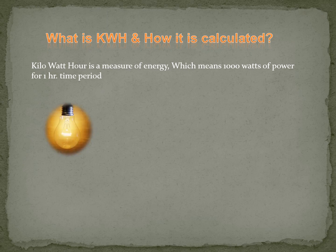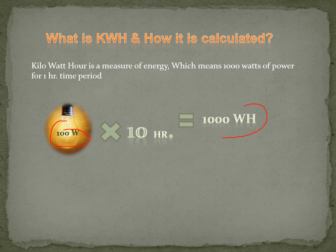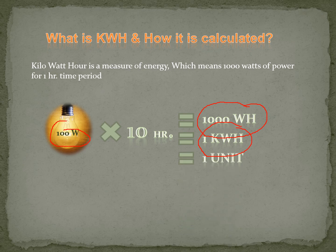Let's take a simple example. Suppose you have a bulb with a capacity of 100 watts, and it is running for 10 hours. If you multiply watts by hours, you get unit consumption. Here, 100 watts × 10 hours = 1000 watt hours, which we call one kilowatt hour — and which we call one unit. So when we talk about a unit, it is one kilowatt hour, meaning 1000 watt hours.